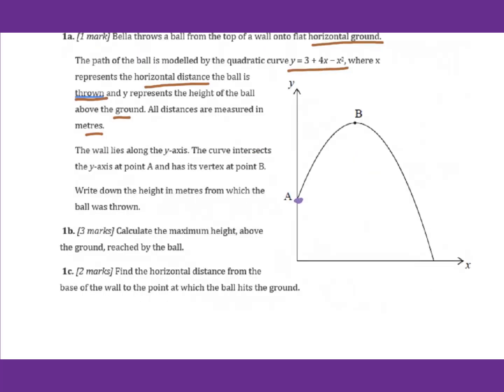We know this is the y-intercept. So we write down y equals negative x squared plus 4x plus 3. As we know, c is the y-intercept, so this is 0, 3.